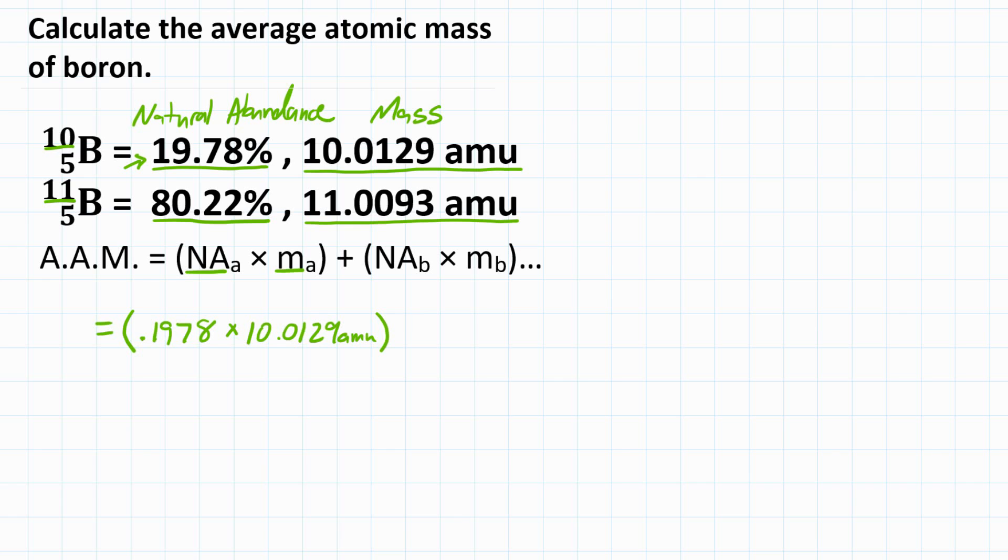We're going to add that to our second isotope, where the natural abundance is 80.22%, as a decimal will be 0.8022, times the atomic mass, 11.0093 AMU.